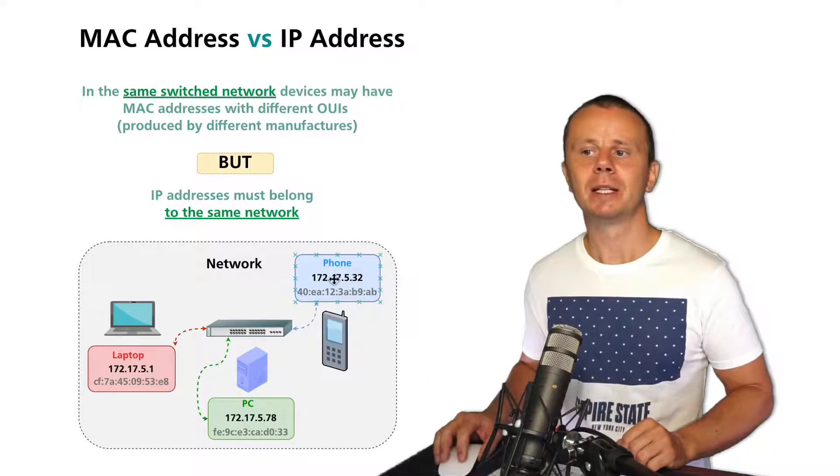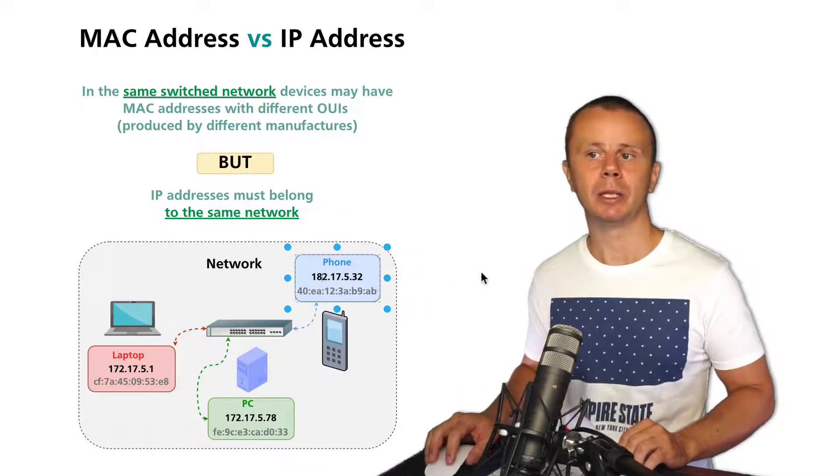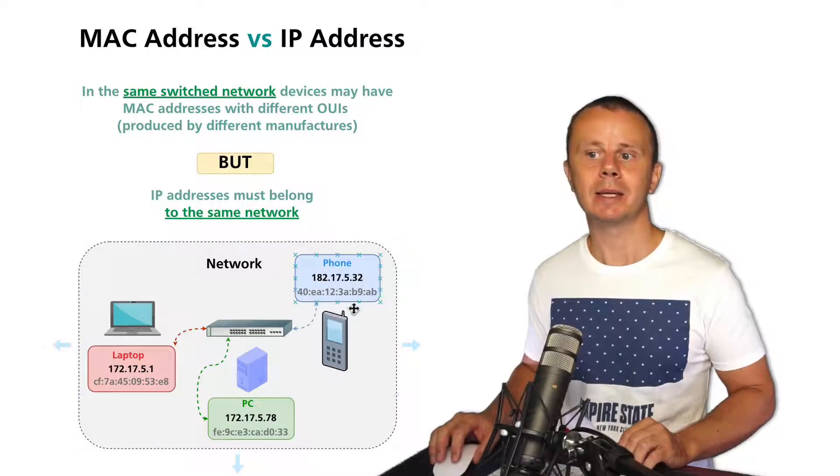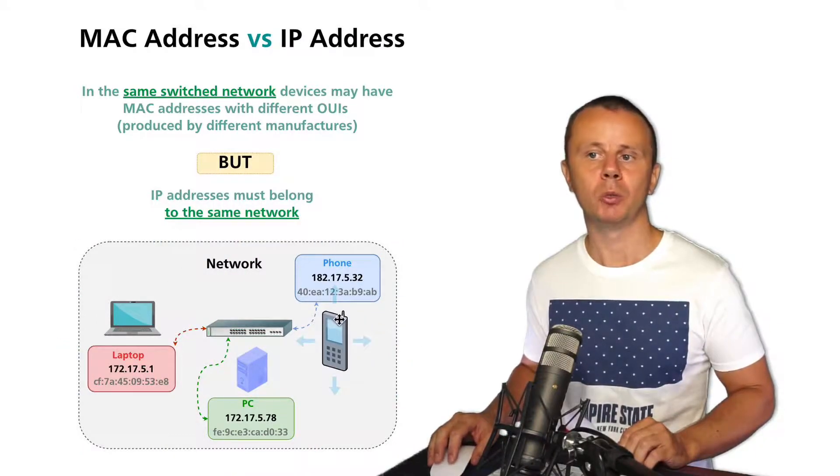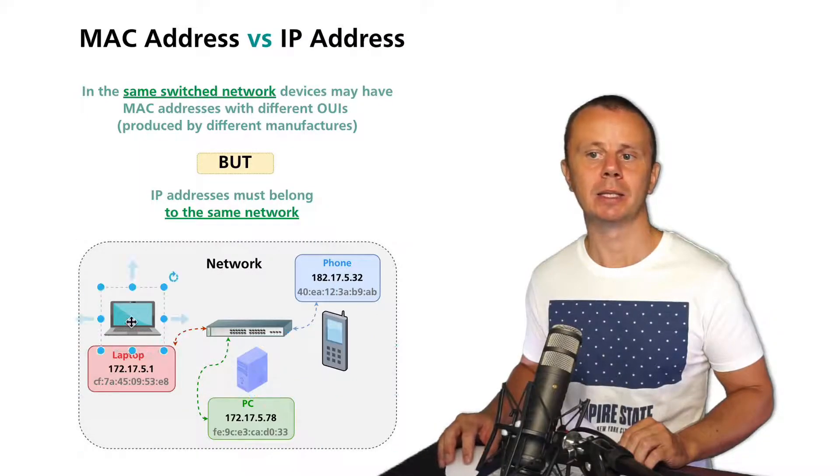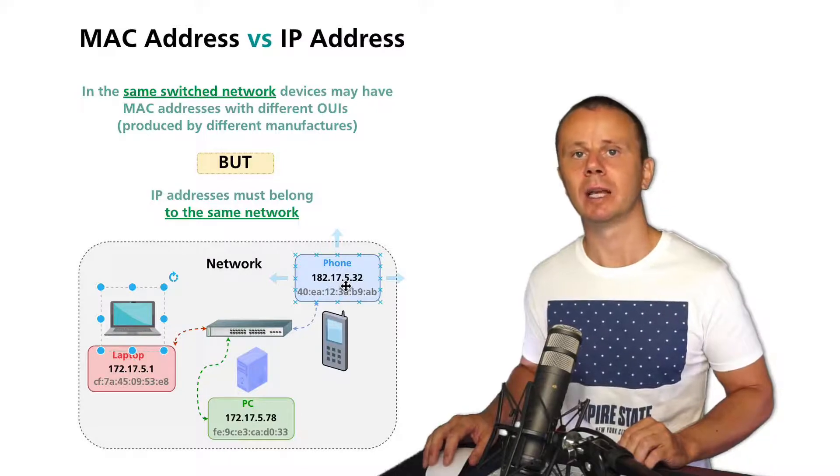If this phone has for example an IP like 182.x.x.x and it connects to the same switched network, then it will not be able to communicate with this server and this computer because its IP address is from a different network.